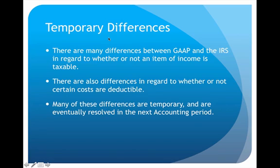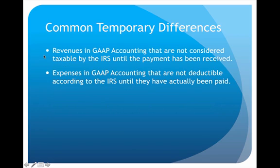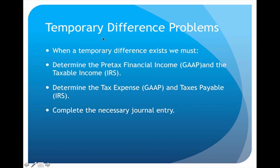Some of the differences between GAAP and the IRS are what we call temporary differences. These differences are only temporarily out of balance — over time they will be resolved — but for these temporary differences we do calculations and potentially journal entries. The common areas to look for are: revenue that GAAP considers taxable but the IRS doesn't consider taxable until the money is received, and expenses that GAAP considers deductible but the IRS doesn't consider deductible until they've actually been paid.